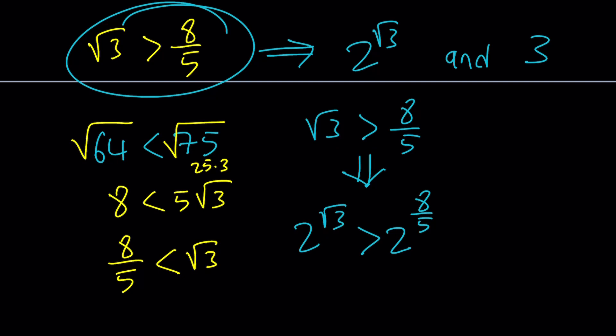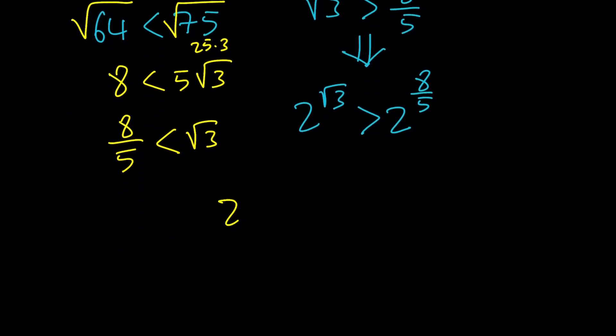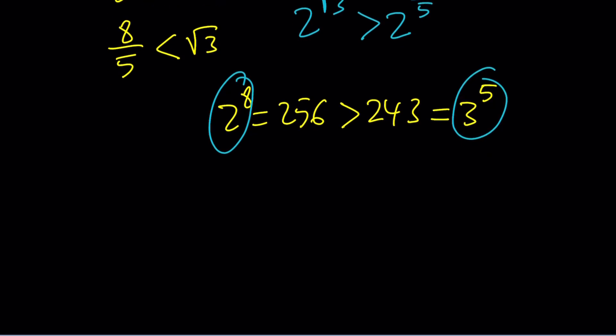If you do know that 2 to the 8th power is 256, and that is greater than 243, which happens to be 3 to the 5th power. Awesome. This shows that 2 to the 8th is greater than 3 to the 5th. Let's rewrite it.